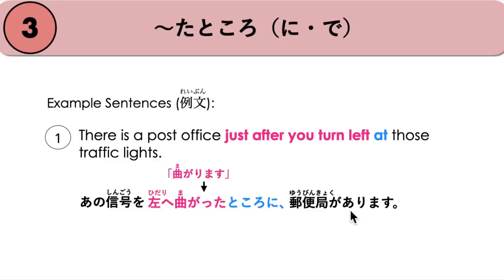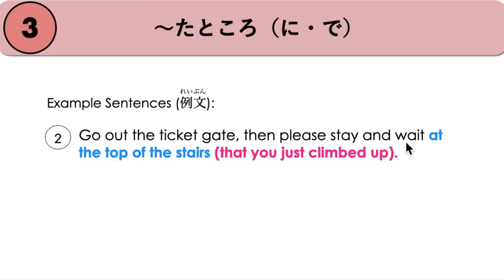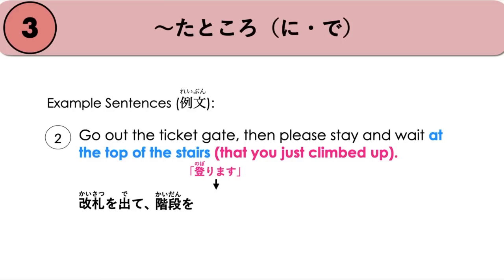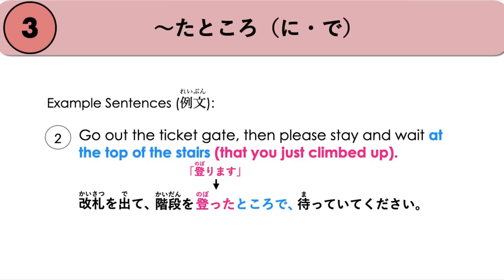Another example: 'Go out the ticket gate, then please stay and wait at the top of the stairs that you just climbed up.' The verb is noborimasu (to climb up), changed to ta form: kaidan wo nobotta tokoro de. We use particle de here because the action is to wait — matteite kudasai. So: kaisatsu wo dete, kaidan wo nobotta tokoro de, matteite kudasai.